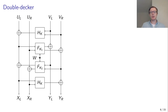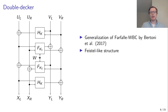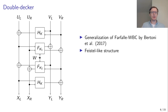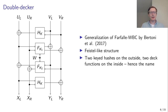The first construction is the double-decker, a generalization of the Farfalle wide block cipher by Bertoni and others. It looks a bit complicated at first, but if you merge the left two lanes and the right two lanes together, you can see it is a four-round Feistel network. The topmost and bottommost functions are the keyed hash functions, and the functions on the inside are DECK functions, hence the name.